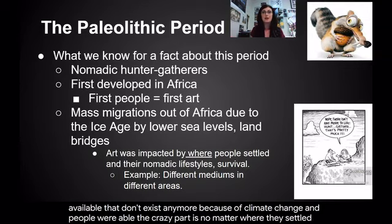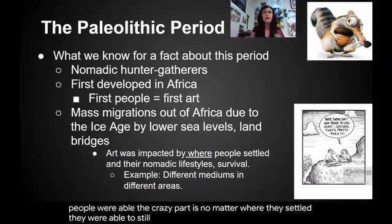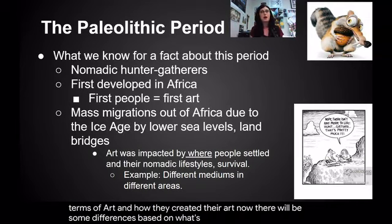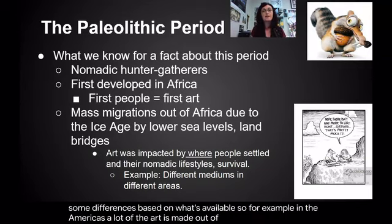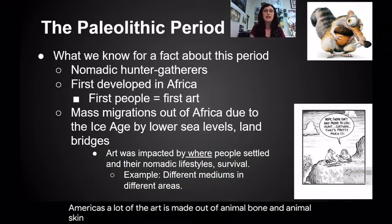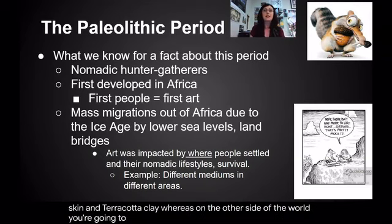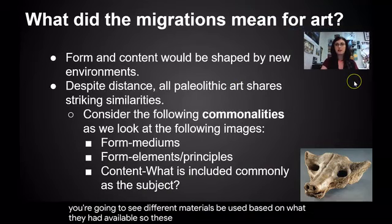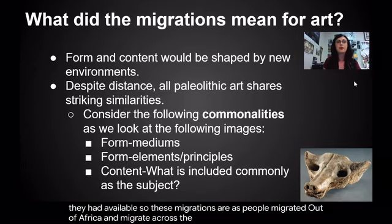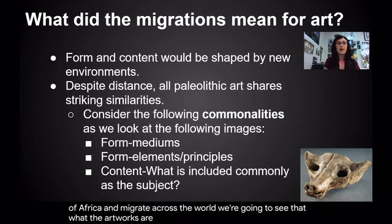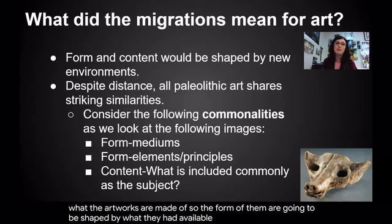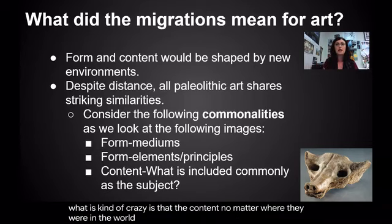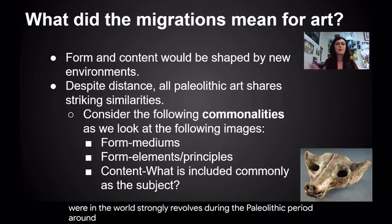No matter where they settled, they were able to still have similarities in what they created in terms of art and how they created their art. There will be some differences based on what's available — for example, in the Americas, a lot of the art is made out of animal bone, animal skin, and terracotta clay, whereas on the other side of the world you're going to see different materials based on what they had available. As people migrated out of Africa and across the world, the form of the artworks would be shaped by what they had available in their environments. But what is kind of crazy is that the content — no matter where they were in the world — strongly revolves during the Paleolithic period around animals.